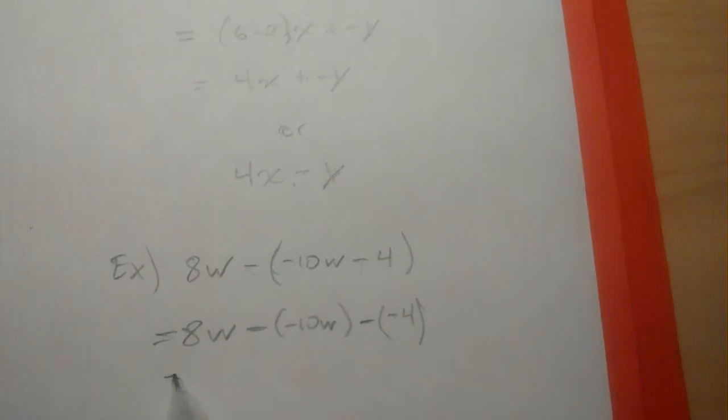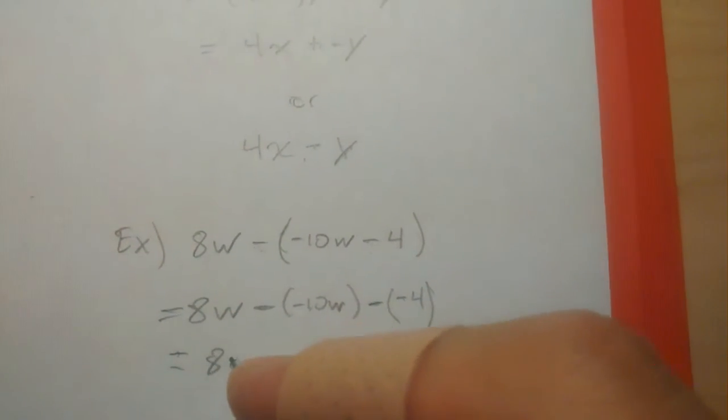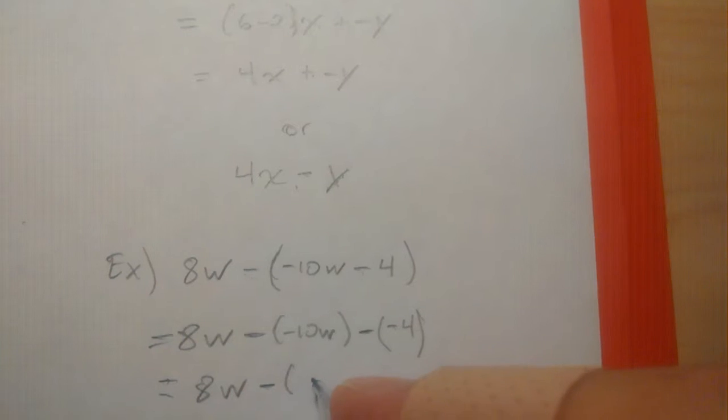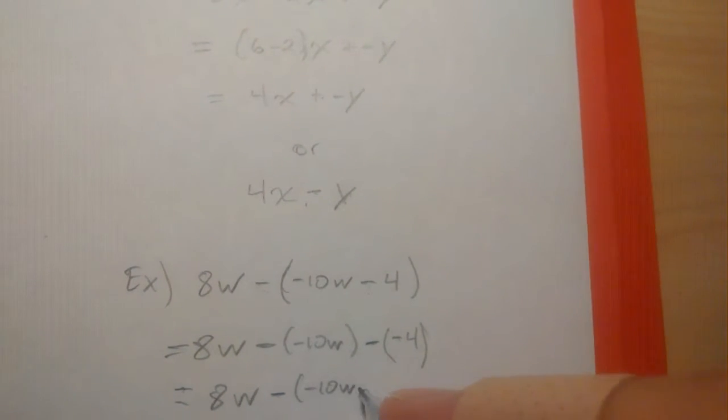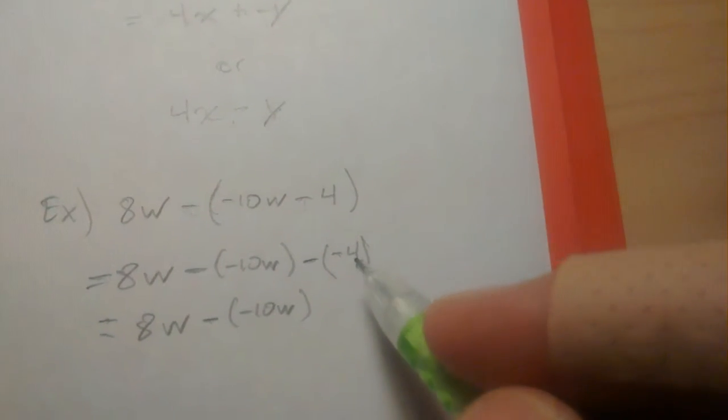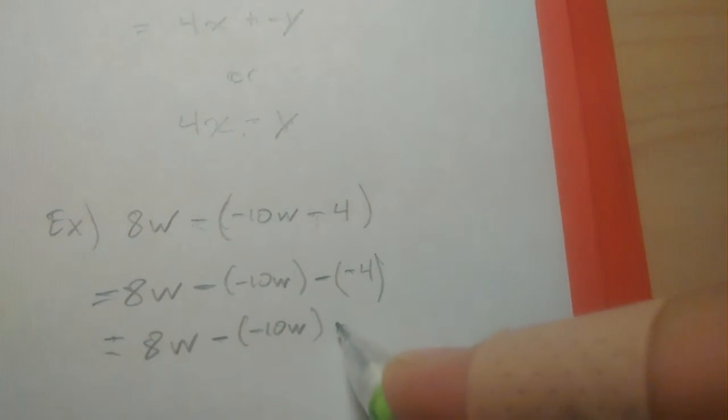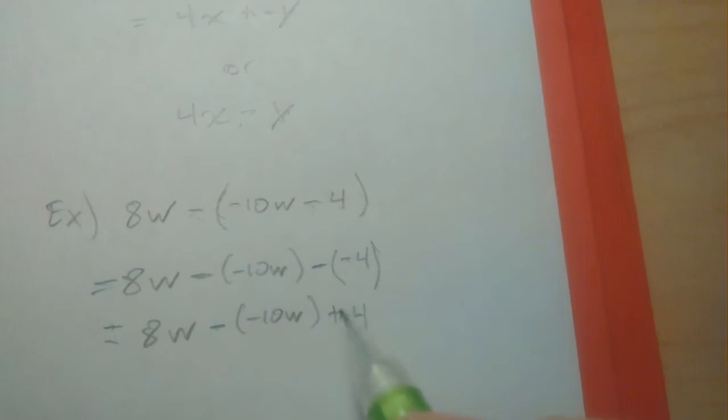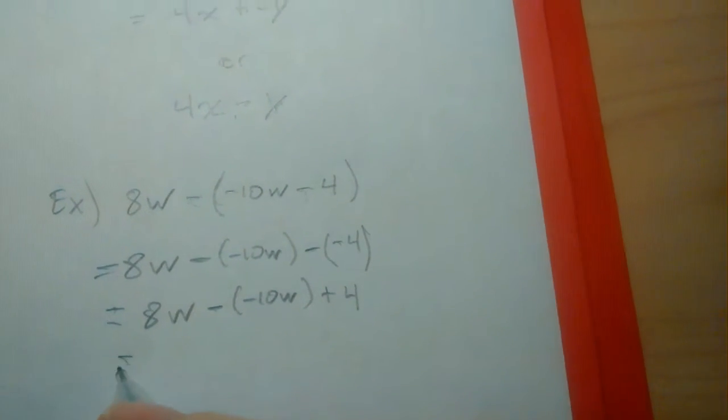So what do we have here? We have 8w subtracting a negative 10w. And the subtraction of a negative 4 is actually equivalent to an addition of 4. So hopefully you can buy into that. Look what we have here.